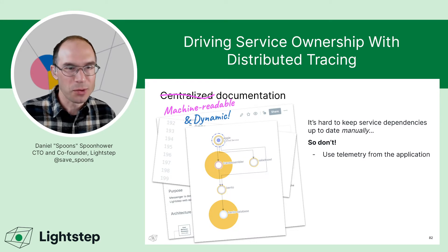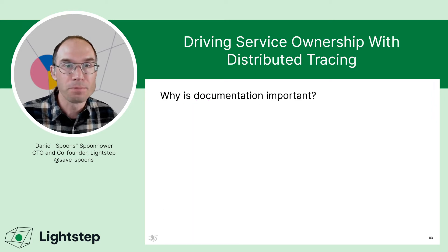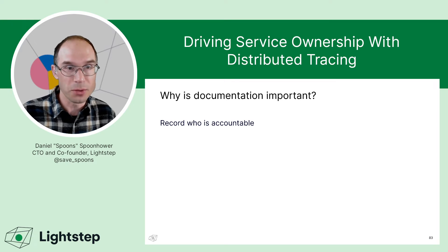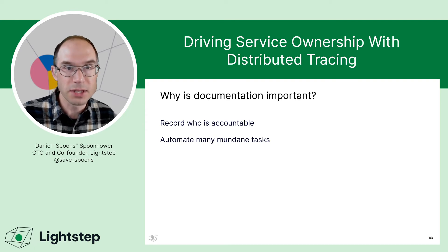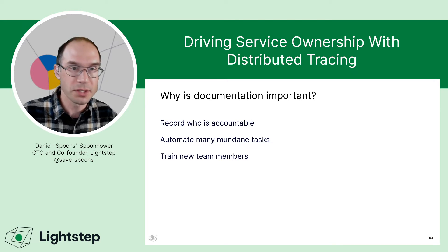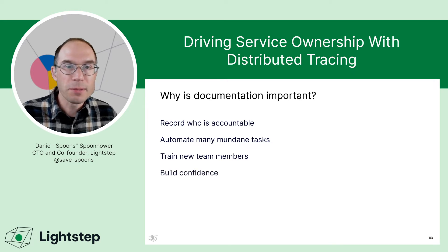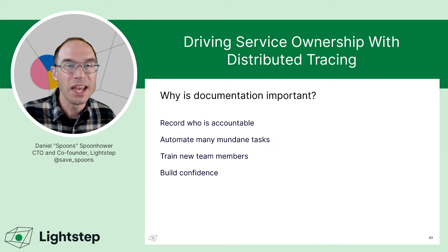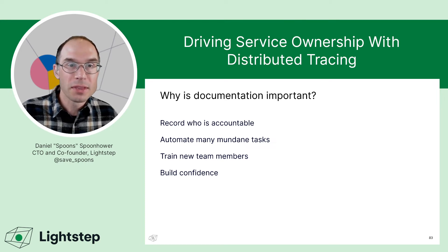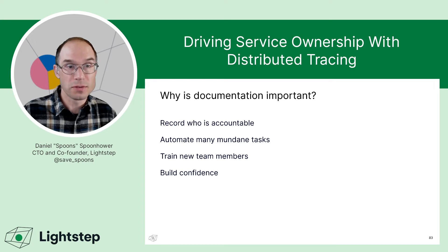Documentation is important, and I think it should be one of the first steps when rolling out service ownership. It lets you record who's accountable — it's a shared database of ownership. It allows you to automate a lot of tasks that can save time, and it's really important for training new team members or internal transfers. Most importantly, documentation is critical for building confidence. Developers want to do a good job, but if they don't feel like they have the information required, they're not going to feel confident about those responsibilities.